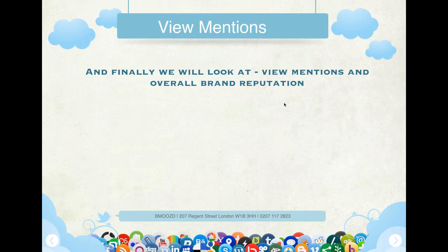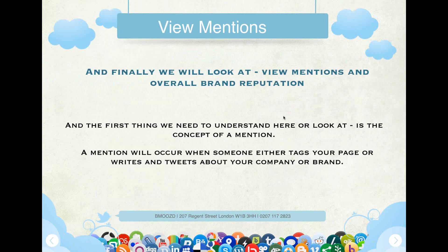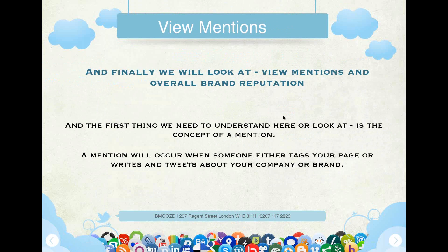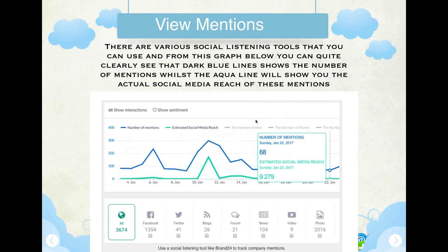Finally, we will look at new mentions and overall brand reputation. A mention occurs when somebody tags your page or writes a tweet about your company or brand. There are various social listening tools you can use. From the graph, you can clearly see that the dark blue lines show the number of mentions, while the aqua line shows the actual social media reach of those mentions. For example, your mention count was 68, and your estimated social media reach was 9,279 — a fairly large estimated social reach.